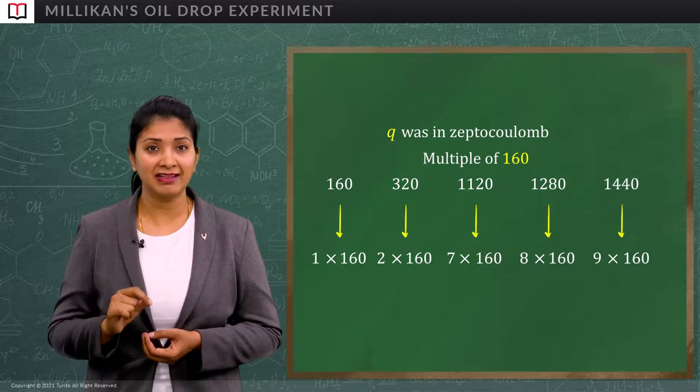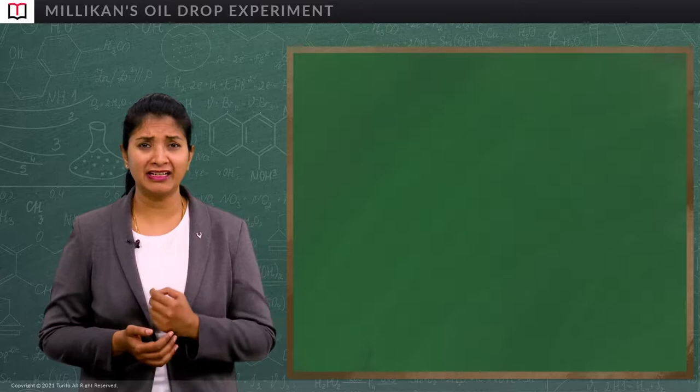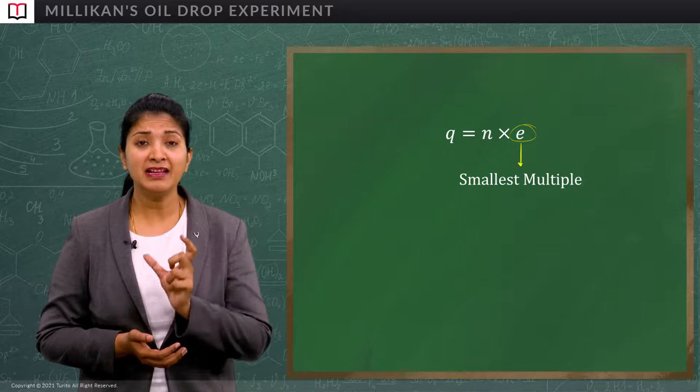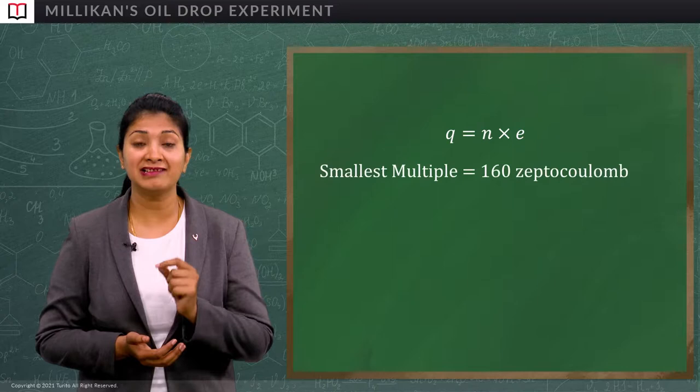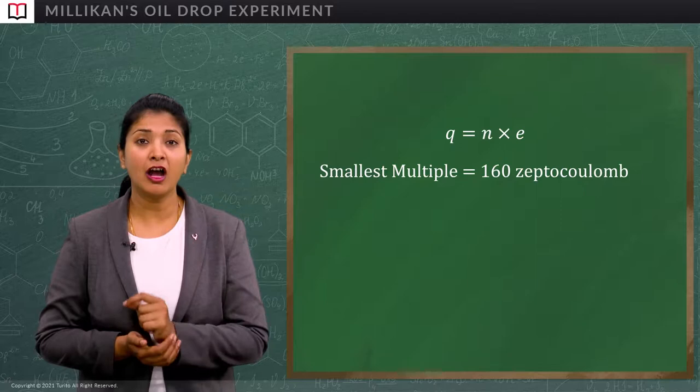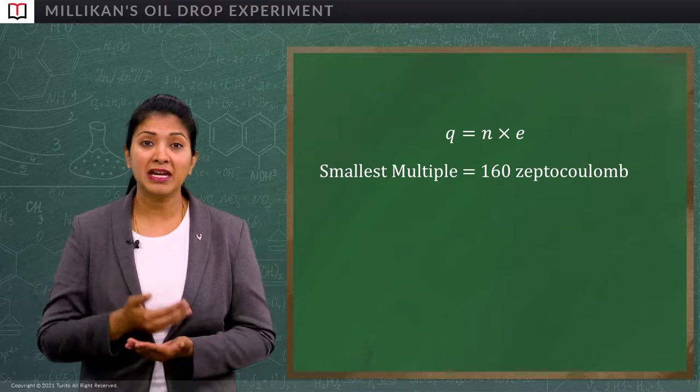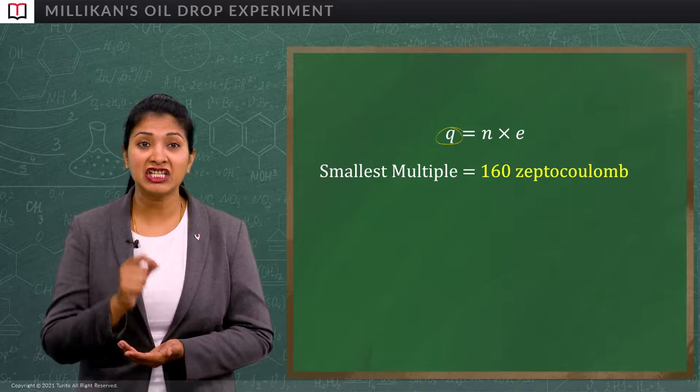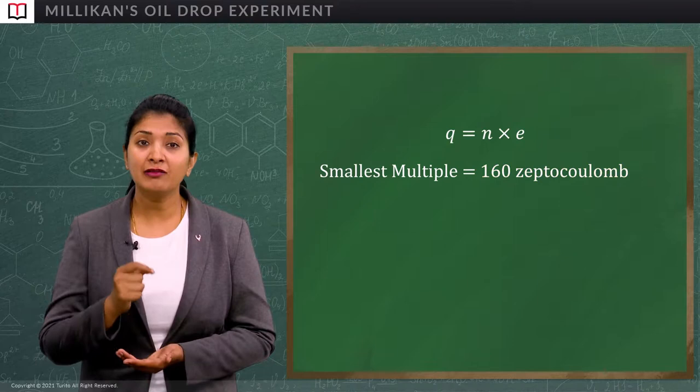Thus, from the above explanation, we come to know that the charge obtained here is equal to N into E. Now, what is this E? E is actually the simplest multiple which we are obtaining here, which is 160 zeptocoulomb. It is also the charge of an electron. How did he know this? This is because he did the experiment many times and each and every time he was getting Q in the multiple of 160 zeptocoulomb.